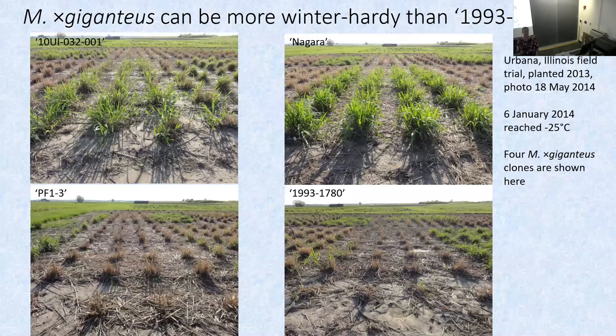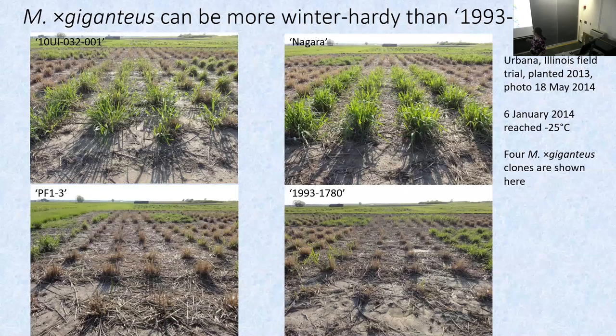At the beginning of 2014 we had an extremely cold day where it got down to negative 25 Celsius. In the following spring, the commercial clone had taken a lot of damage. From just a few different crosses, we have some clones that are better at dealing with the winter.